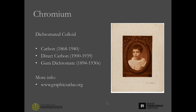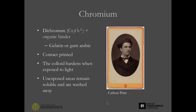There's another class of 19th century photographic prints based on the light sensitivity of chromium. Chromium, specifically a compound called a dichromate, is light sensitive when mixed with certain colloids like gelatin or gum arabic. Here are our dichromated colloid processes: the carbon print, which is the most common in the 19th century; direct carbon, commonly known as the Fresson process; and gum dichromate, or commonly known as gum bichromate, which uses gum arabic as a binder. Most photomechanical printing processes are also based on the light sensitivity of chromium.